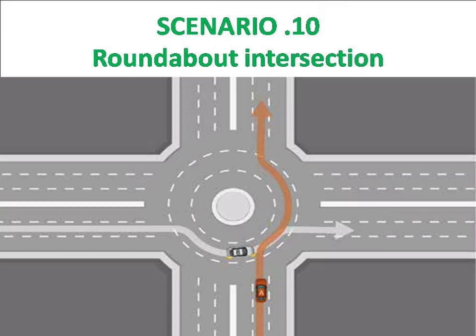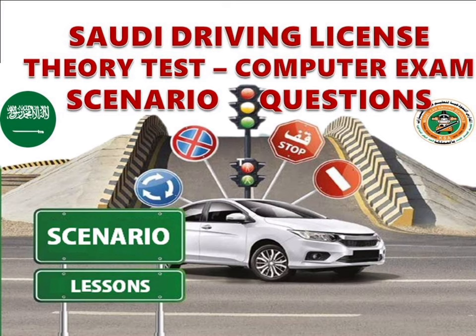Scenario 10: roundabout intersection. Two cars are approaching a roundabout — one car is already inside and the other is entering. The car already inside the roundabout has the highest priority. The white car is already inside, so it has higher priority than the red car. The red car must wait until the white car drives away. Any driver approaching a roundabout must give way to vehicles already traveling around it.